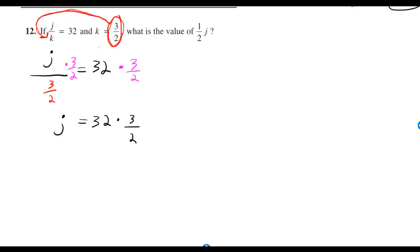Then if you multiply both sides by 3 halves, the 3 halves on the bottom cancels. And you're left with j is equal to 32 times 3 halves.